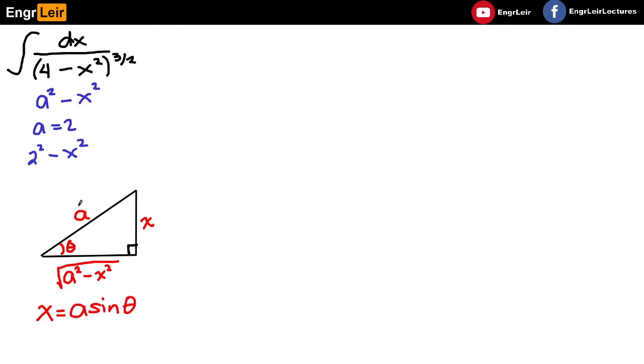We can use that substitution dito sa equation natin. We can say, we let x is equal to a is the constant, so 2 sine theta. And of course, get the derivative. This is 2 cosine of theta d theta. And we use this substitution doon sa original natin equation.